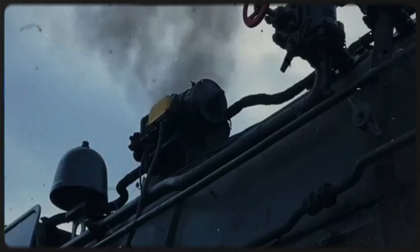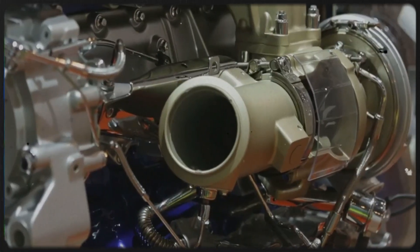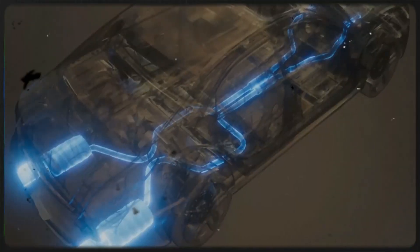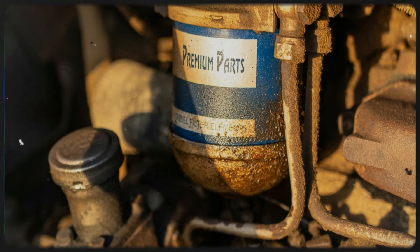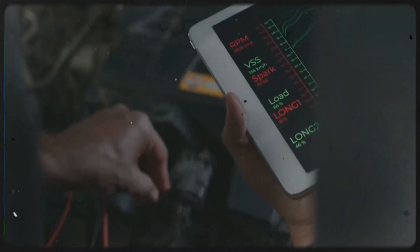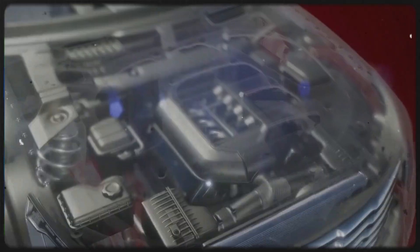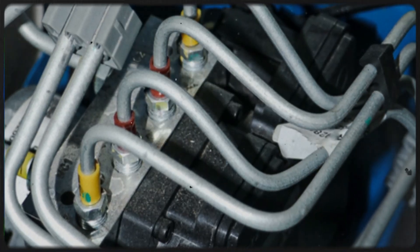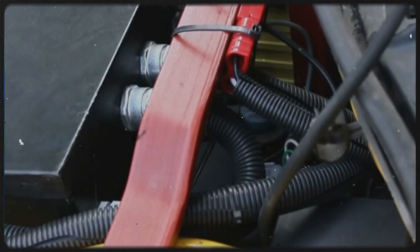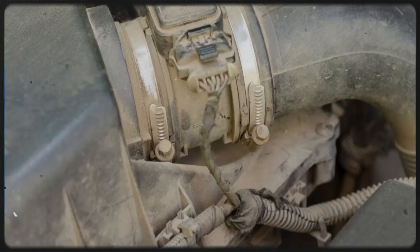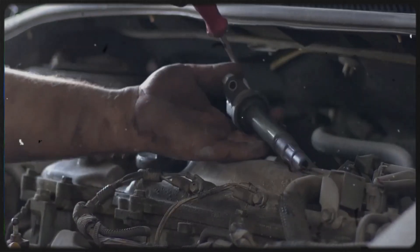Another point to consider is the energy density of the fuels themselves. Diesel fuel contains more energy per liter compared to gasoline. This means that when burning diesel, the engine gets more energy out of the same volume of fuel. This contributes to the improved fuel economy of diesel engines. Also, diesel fuel has a different chemical composition. It's heavier, oilier, and has higher cetane number, which essentially means it ignites more easily under compression. Gasoline has a higher octane number, which is related to its resistance to knocking or premature ignition, suitable for spark ignition engines.